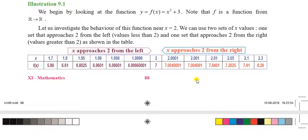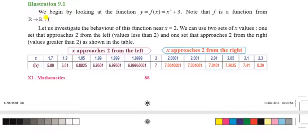Let us look at a good example. Take f(x) = x² + 3, so y = f(x) = x² + 3. This is a curve — the type of curve y = x² gives x² = 4y, which is a parabola opening upward. This function is defined from R to R, i.e., real number to real number. Now we want to investigate the behavior of this function near x = 2.